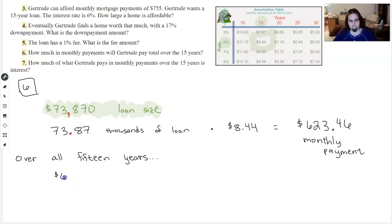and the check she actually writes is $623.46. She does that every month, so times 12 months. And she does that for 15 years.